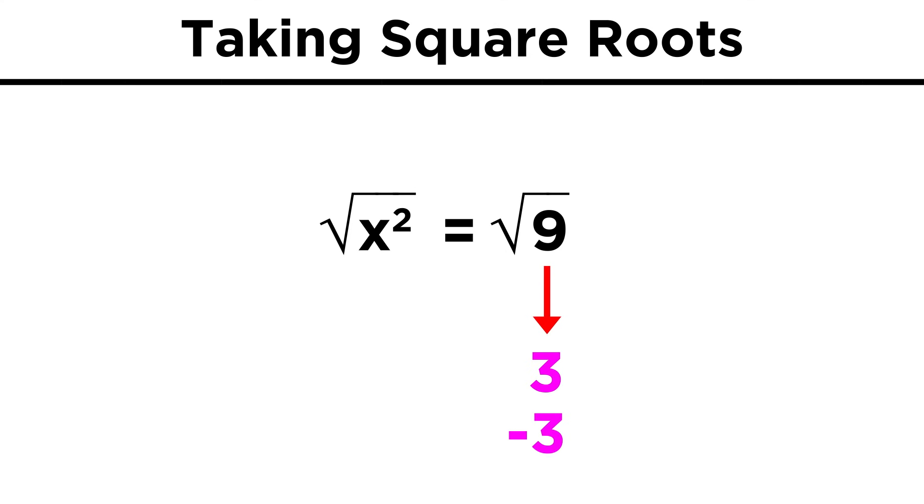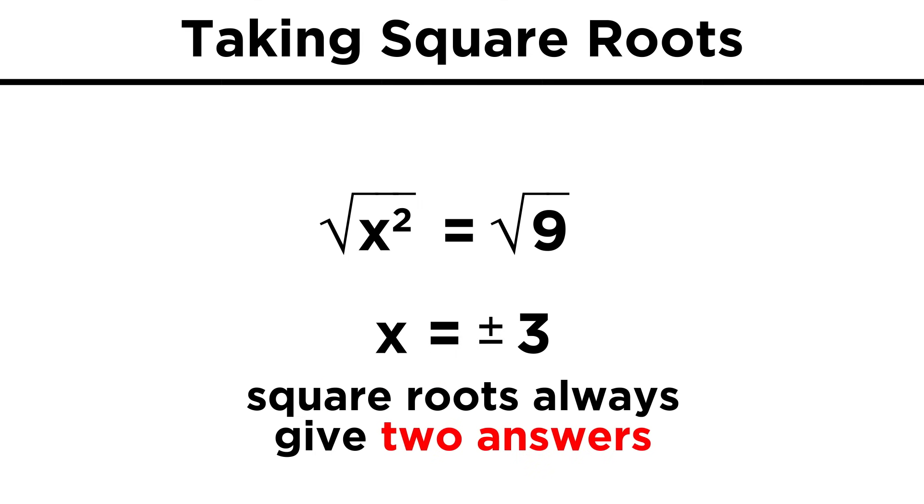Remember that a negative number times a negative number is positive, so both of these values work for the square root of nine. That means that the square root of nine is equal to positive three or negative three, which we sometimes label this way, with both the plus and minus sign next to the three, and we refer to this as plus or minus three. Any square root will do this, so there are always two answers when we take a square root.